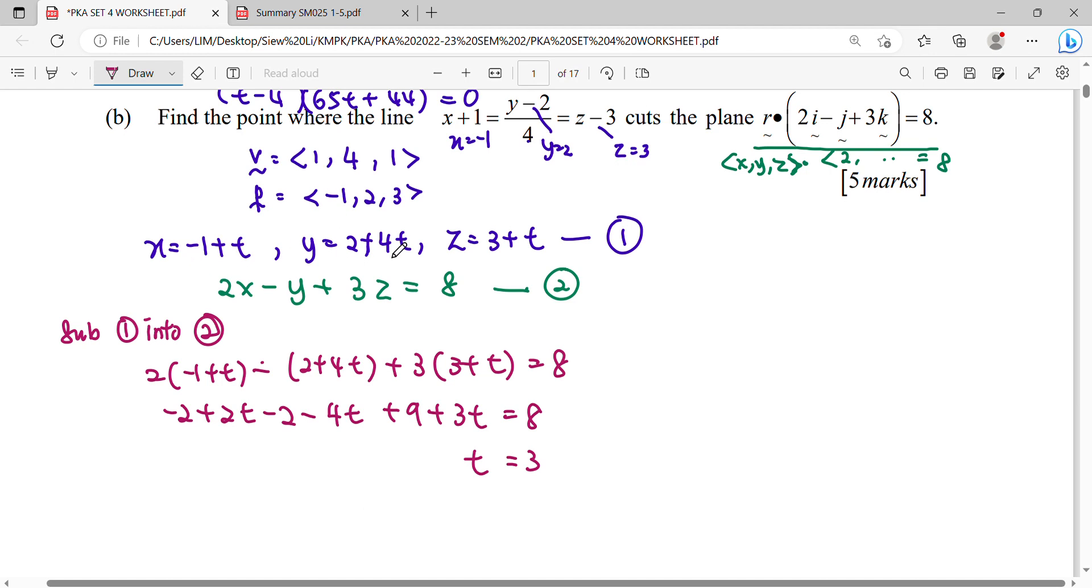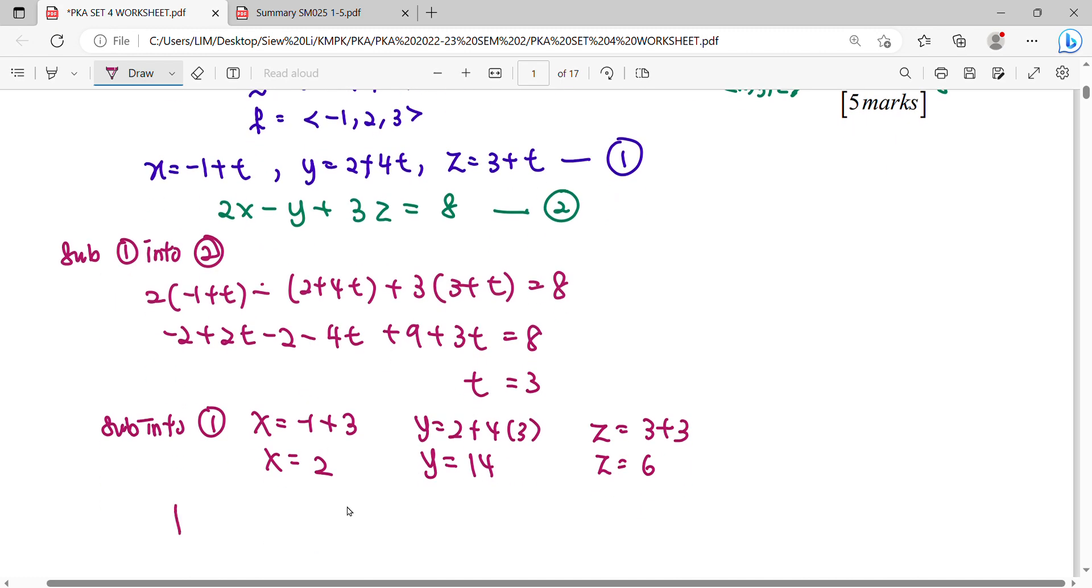x is negative one plus three. You know the t already. So what's your x coordinate? Two. Y coordinate? Fourteen. Z coordinate? Six. So this is the value. When you're asking for the point, you have to put it in the coordinate form in brackets: (2, 14, 6).